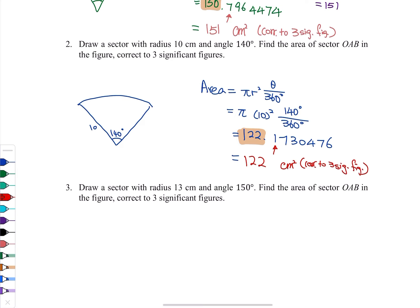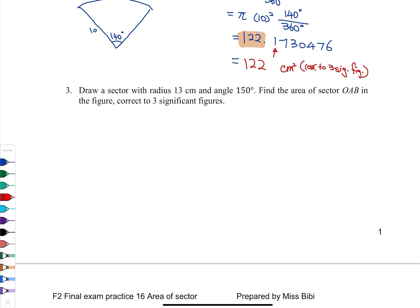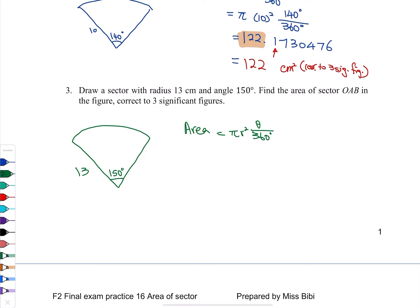Let's continue. Draw the sector, draw the angle. Area will be π r² for the circle and then we just need part of it. So: π × 13² × (150 / 360). Don't forget the degree sign. Try to click everything on your own — pause the video, do it yourself, and see if you get the right answer.